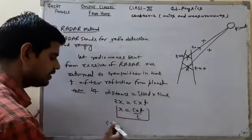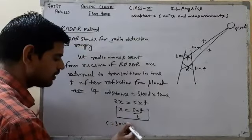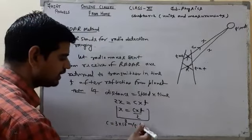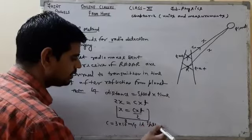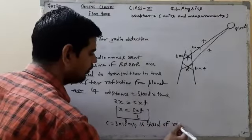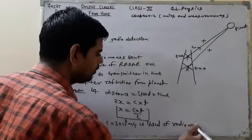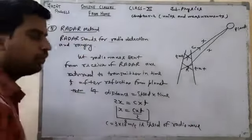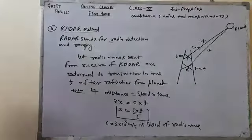Here c equals 3 into 10 to the power 8 meters per second, which is the speed of the radio wave. Now pause the video and note it down.